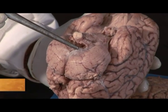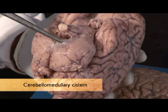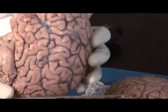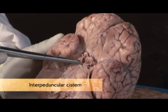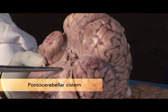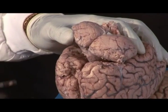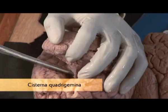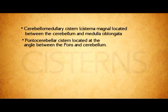At this space, we have the cerebromedullary cistern. We have other types of cistern: the interpeduncular cistern, and the pontine cistern, located between the cerebellum and the medulla oblongata. We also have the pontocerebellar cistern, located at the angle between the pons and the cerebellum.